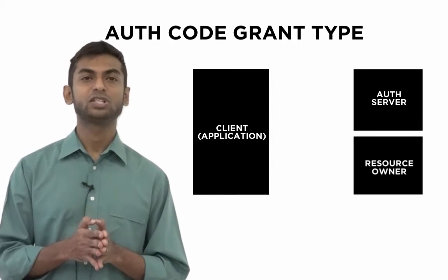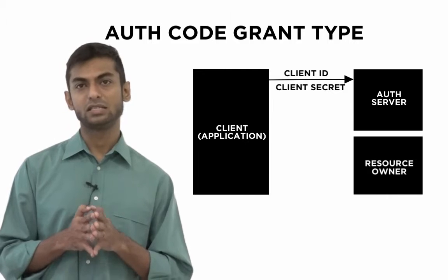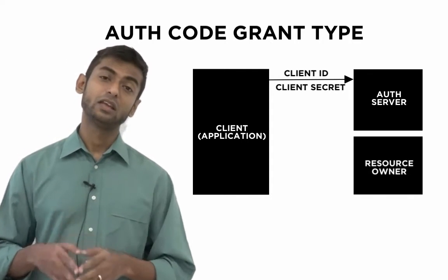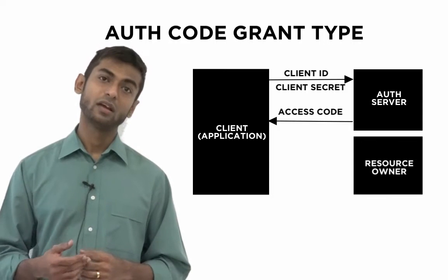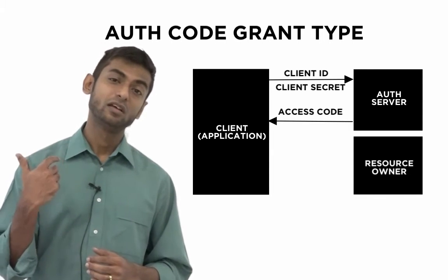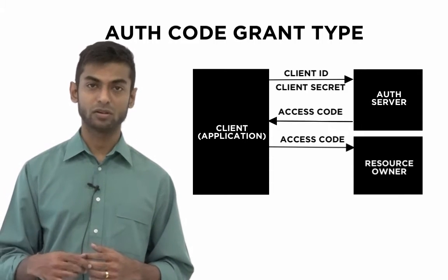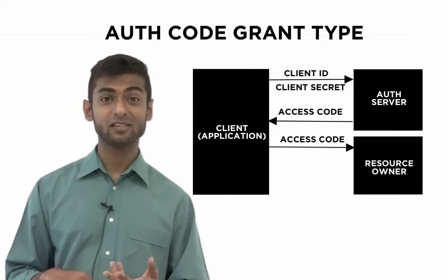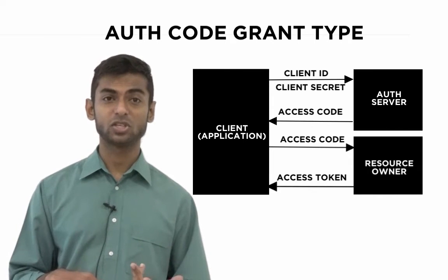Now let's look at the various authorization flows or grant types available through OAuth. The first is the authorization code grant type. In this grant type, the application provides the client ID and secret when making its request to the authorization server. The authorization server sends back an access code, and the application sends that access code to request an access token. The resource owner also needs to get involved in authorizing the request.